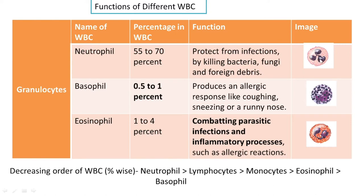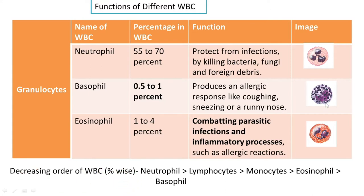Next is basophil. Its percentage is 0.5 to 1 percent of the total WBC. Its function is to produce allergic responses — whenever some irritant enters our body, it elicits allergic responses like coughing, sneezing, or runny nose. As for its appearance, it is a granulocyte with big granules that cover almost all parts of the cell. Its nucleus is horseshoe-shaped, but because of the immense presence of granules, that shape of the nucleus is not visible when observed under the microscope.